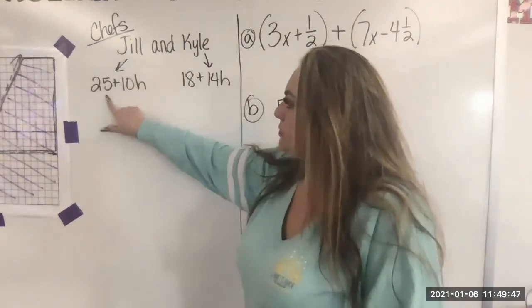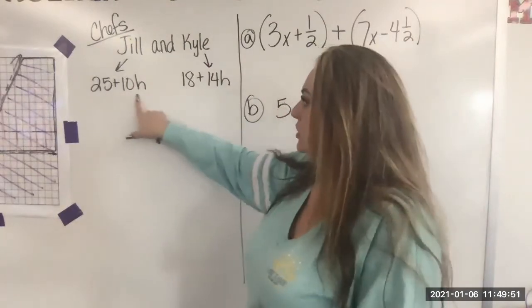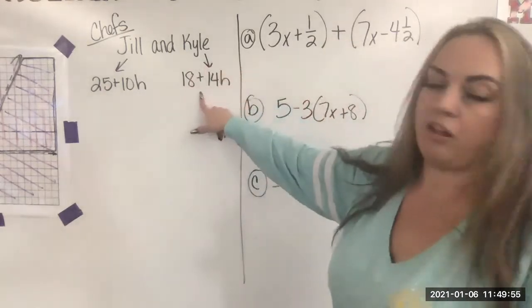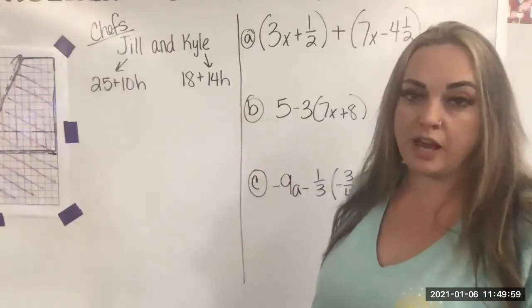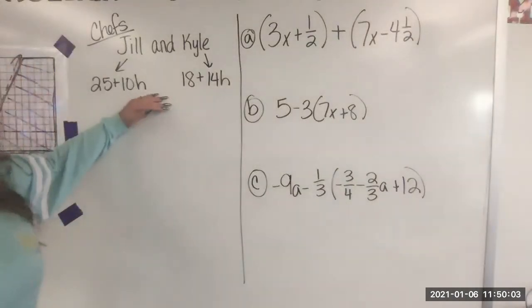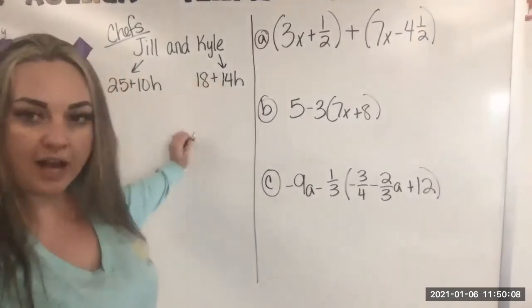Jill gets paid $25 for her shift plus she gets $10 an hour. And Kyle gets $18 basically for his shift to show up, but then he gets $14 an hour. We want to figure out what the total amount is that the company needs to pay out for Jill and Kyle.